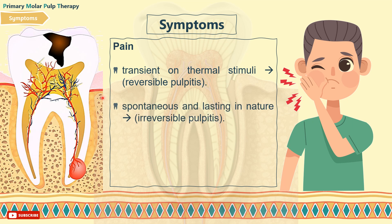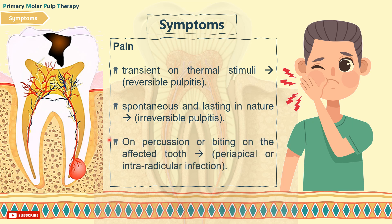Secondly, spontaneous and lasting pain — it indicates irreversible pulpitis, and in that case your options would be pulpectomy or extraction. Thirdly, pain on percussion or biting on the tooth — this indicates periapical or intra-radicular infection, and also in that case your options would be pulpectomy or extraction.